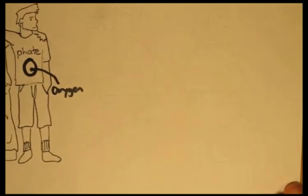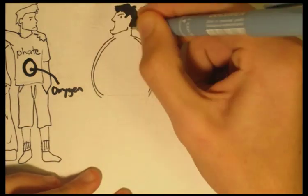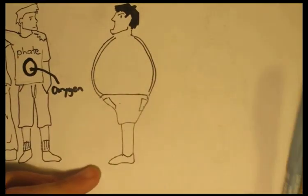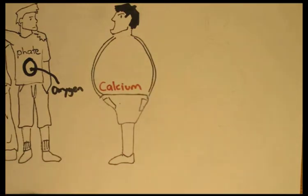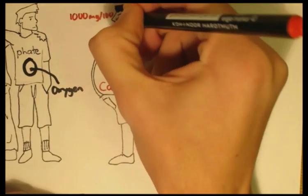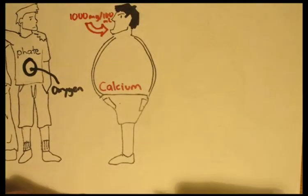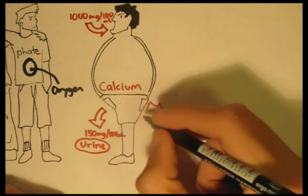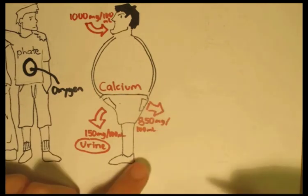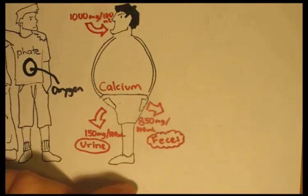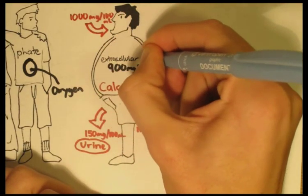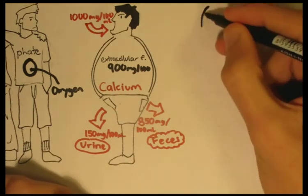So how much calcium and phosphorus do we consume daily? And where does it go? Well, humans consume about 1000 mg of calcium per 100 ml daily. Now about 150 mg per 100 ml of this is secreted as urine, and 850 mg per 100 ml as feces. Inside the body, the extracellular fluid contains 900 mg per 100 ml, which exchanges continuously with the bones and cells in the body.